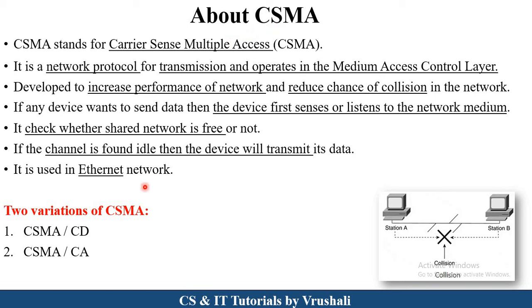Ethernet networks are where all wired devices are present. There are two variations of CSMA: first is CSMA/CD, and the other one is CSMA/CA. Let's discuss them one by one.